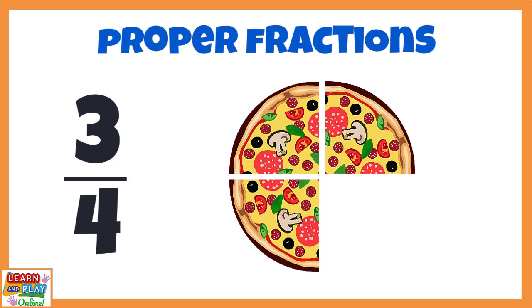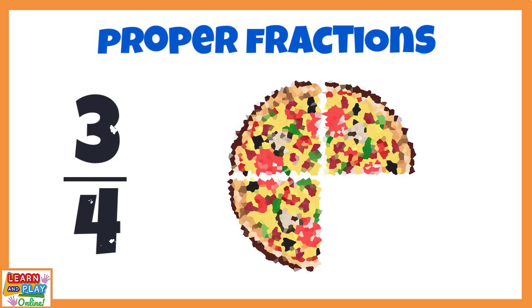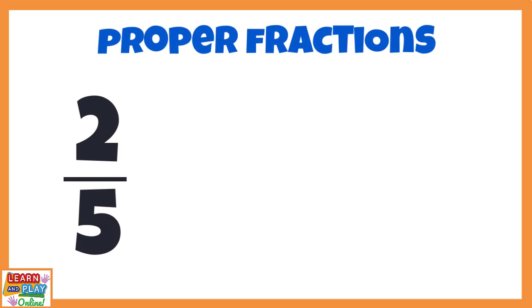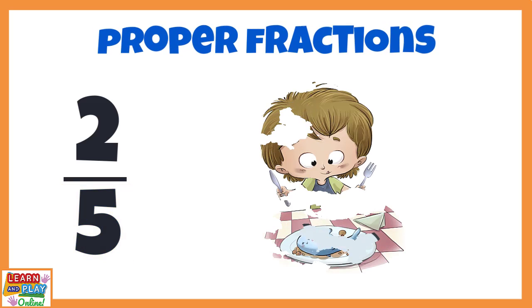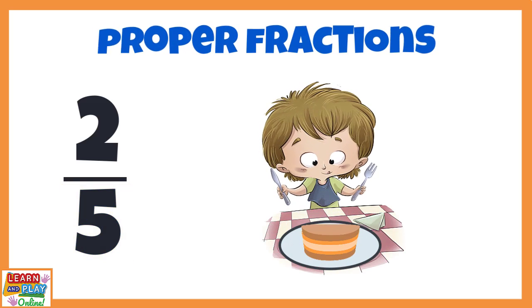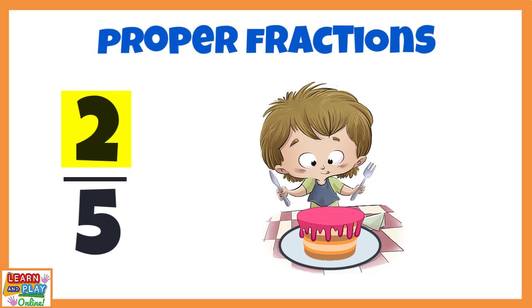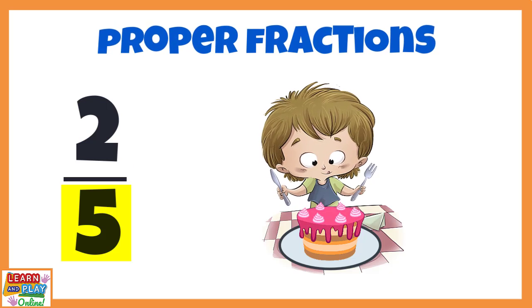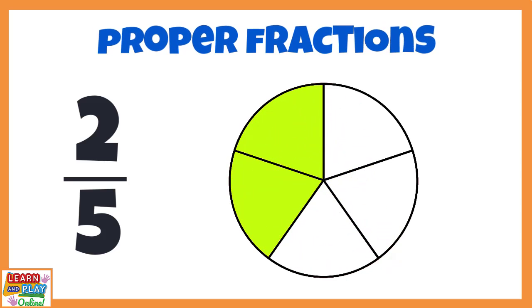Let's explore this with one more proper fraction. This fraction, 2 fifths, is a proper fraction because proper fractions have a numerator that is less than the denominator. If we apply 2 fifths to a real life example, we could say that you ate 2 slices of cake out of a total of 5 slices. This is what it would look like as a visual representation. So you can see with this new example of a different proper fraction, it still shows a value that is less than 1.